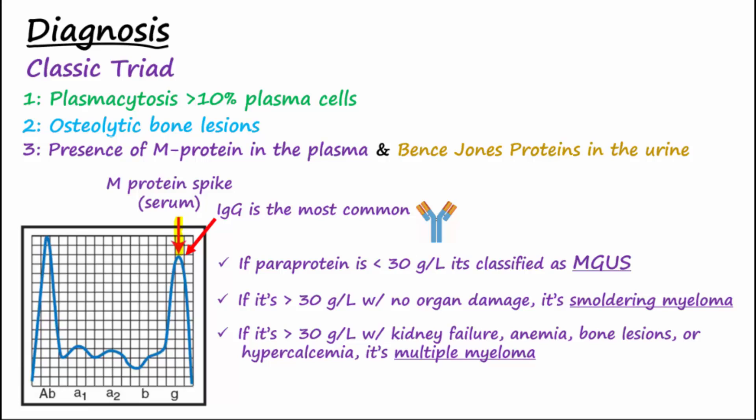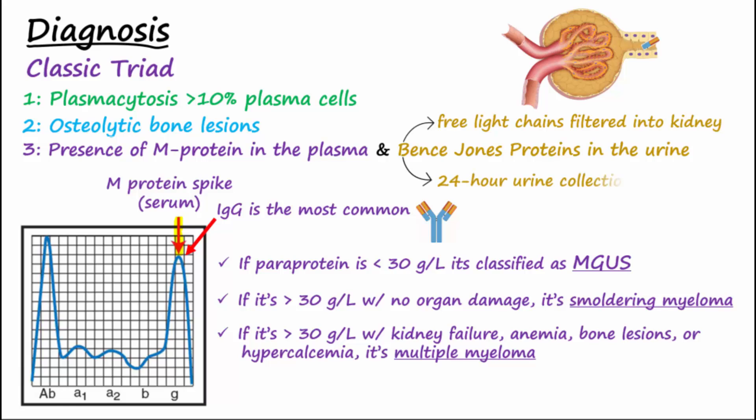Bence Jones proteins are free light chains and are small enough to filter in the kidney and are directly toxic to renal tubular structures and readily accumulate in the urine, so a 24-hour urine collection can be done.